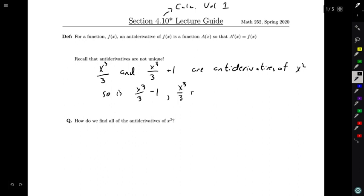x³/3 + a million, or a 1 with a bunch of zeros after it. And whatever constant you want to add to x³/3, that's another antiderivative of x².